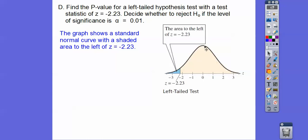So always draw a bell-shaped curve, and bell-shaped curves usually have 0 in the middle if we're doing a Z test. And then negative 1, negative 2, negative 3 to the left, and 1, 2, 3 to the right.